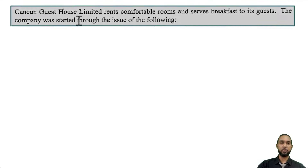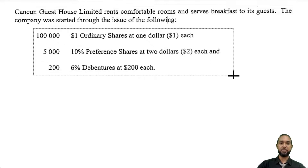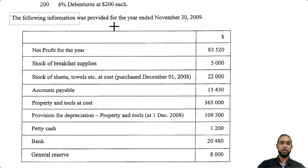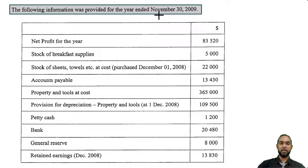The question starts out that Cancun Guesthouse Limited rents comfortable rooms and serves breakfast to its guests. The company was started through the issue of the following: 100,000 $1 ordinary shares at $1 each, 5,000 10% preference shares at $2 each, and 200 6% debentures at $200 each. The following information was provided for the year ended November 30th, 2009.